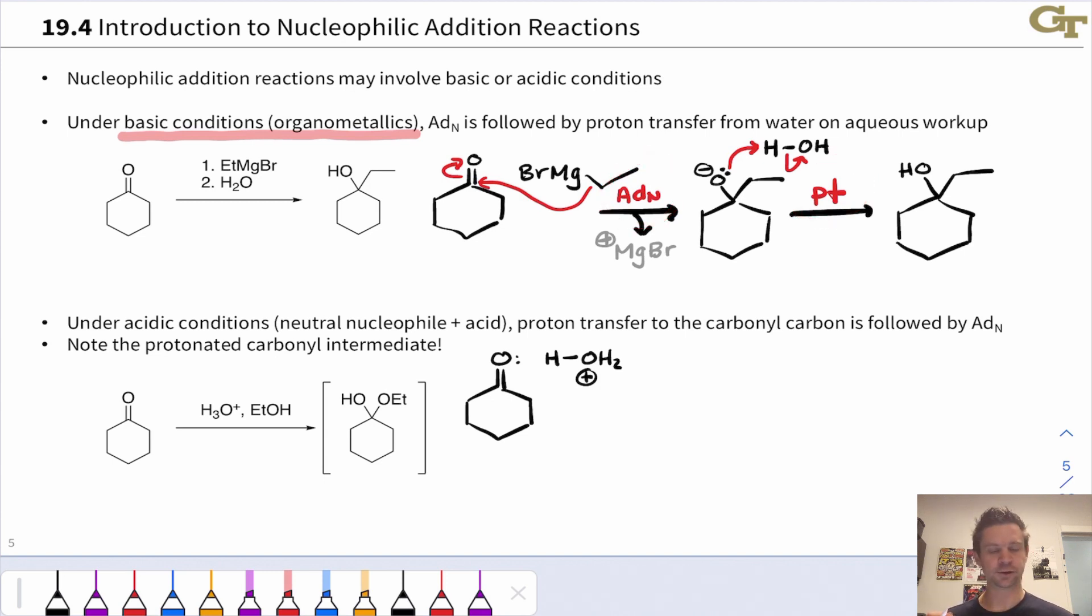Under acidic conditions, we essentially flip the script, and this is typical of much weaker nucleophiles—alcohols, amines, and thiols for example—where we often need an acid catalyst to get the reaction to go at an appreciable rate. Under these conditions, thanks to the acid catalyst, proton transfer occurs first. This is what I mean by flip the script. We protonate the carbonyl oxygen, which is a decent base.